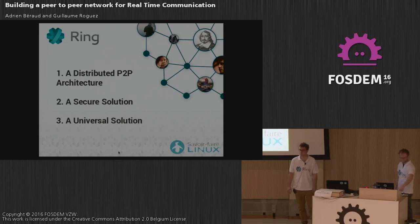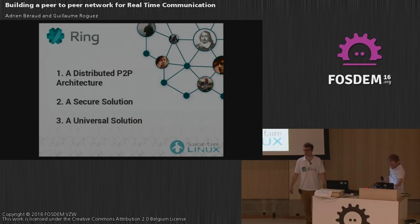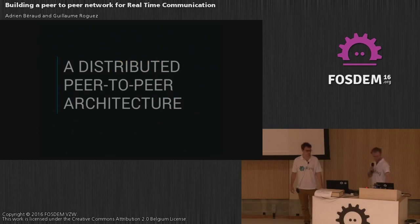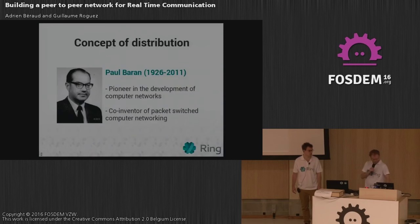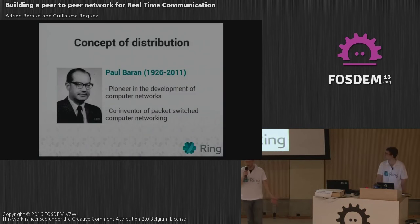In the second part of this presentation, we'll show you how we made Ring a fully distributed architecture, how Ring is secure, and finally why we think Ring can be used as a universal communication solution. So, distributed peer-to-peer architecture — what does this mean exactly? I'll start by talking about different network topologies, because that's the main problem.